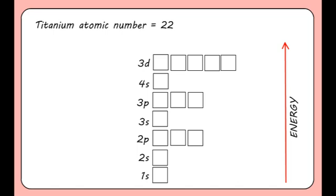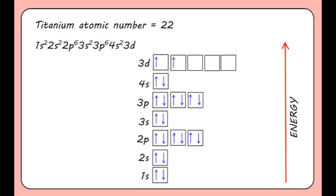We now need to add 22 electrons remembering to start with the lowest subshell and add electrons singly to each orbital before pairing up and making sure when the electrons are paired they have opposite spins. The electronic configuration is 1s2, 2s2, 2p6, 3s2, 3p6, 4s2 and 3d2.